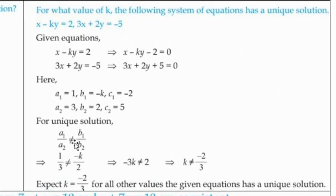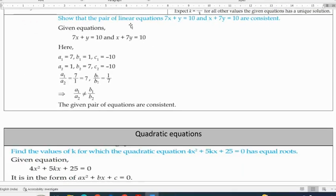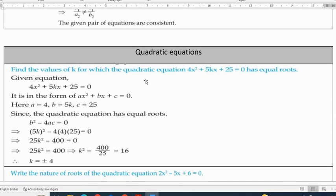No solution means you have to equate first to only a1 by a2 equals b1 by b2. Equate the ratios and you will get the t value. Similarly unique solution means a1 by a2 not equals b1 by b2, k is not equal to minus 2 by 3. Except this value all are solutions. Check whether this pair of linear equations are consistent or inconsistent.